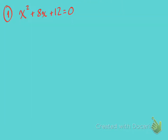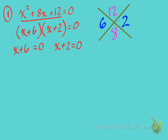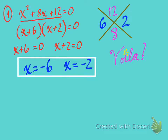Here's the first one. Set up your diamond with 12 on top and 8 on the bottom. You come up with 6 and 2 for the numbers on the sides. Write it out as (x plus 6) times (x plus 2) equals zero. Set those factors equal to zero and solve — voilà, your solutions are x equals negative 6 and x equals negative 2.